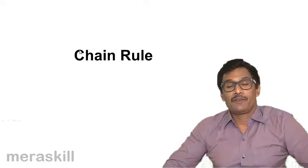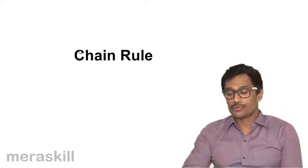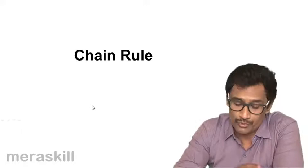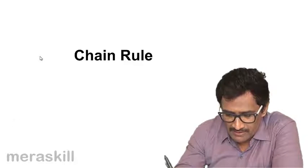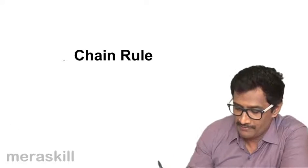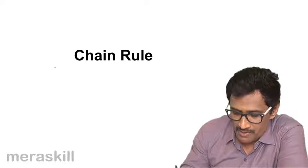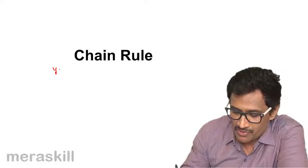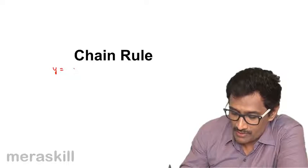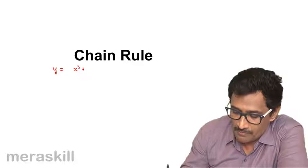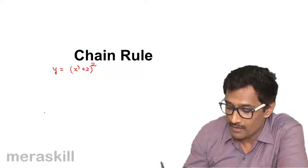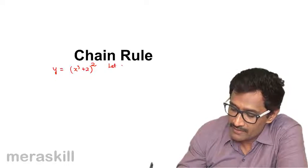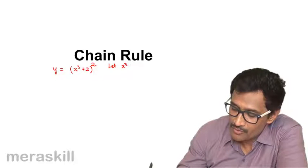Now we have a very important rule that is to do with the chain rule. We have again come across this. Let's take a simple example — suppose I have a function y which is (x³ + 2) the whole square. So we can let x³ + 2 be equal to say u.